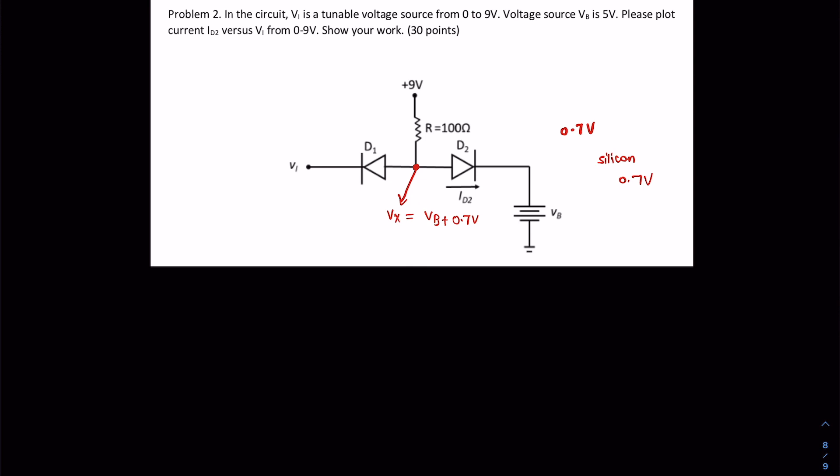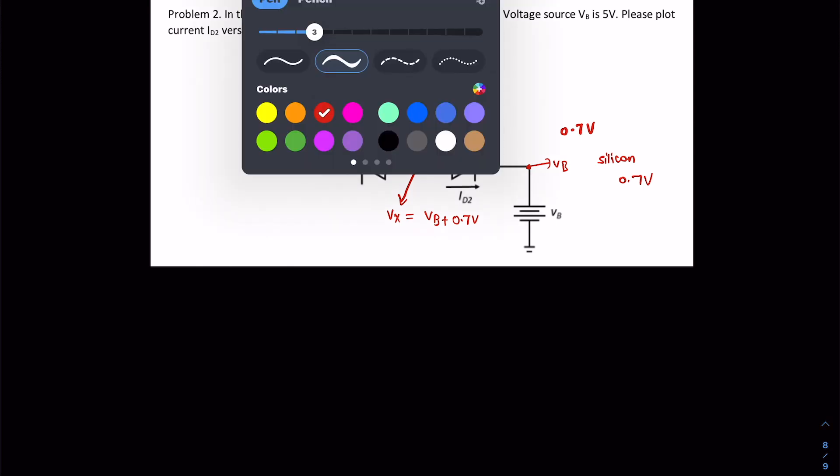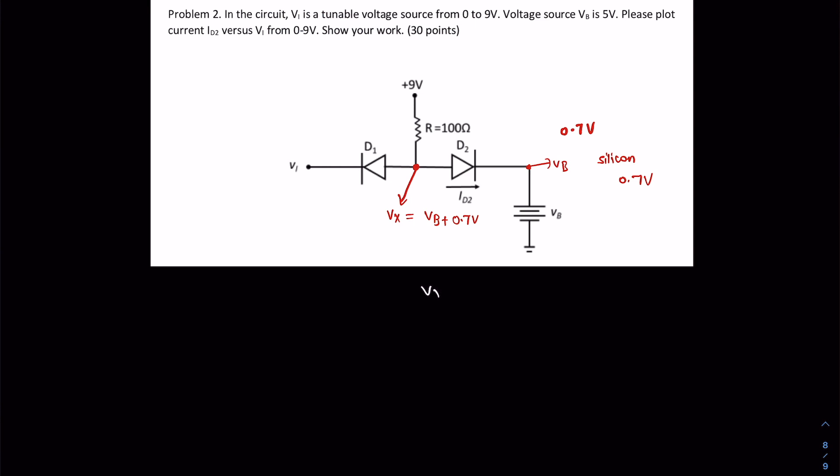This voltage is VB, so it must be VB plus 0.7 volts. That is nothing but VX must be 5.7 volts at least, otherwise D2 will not be on.